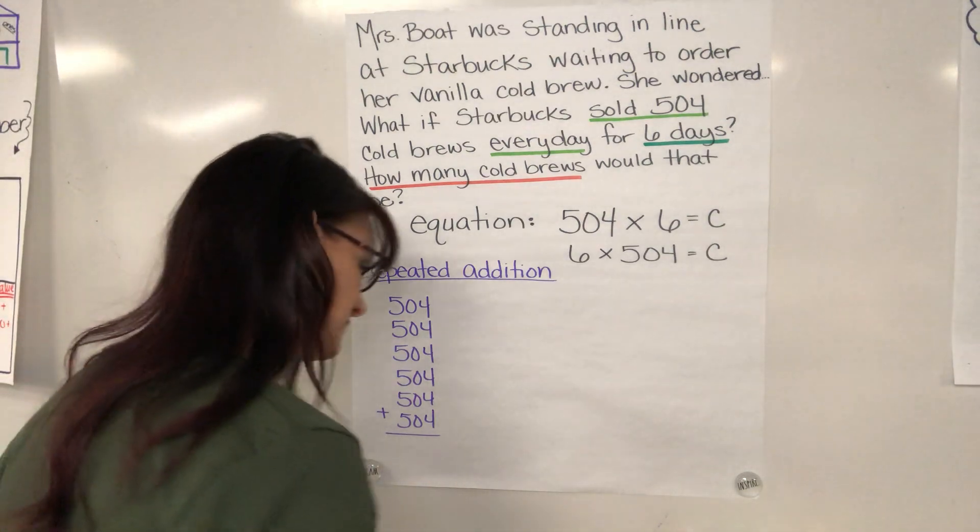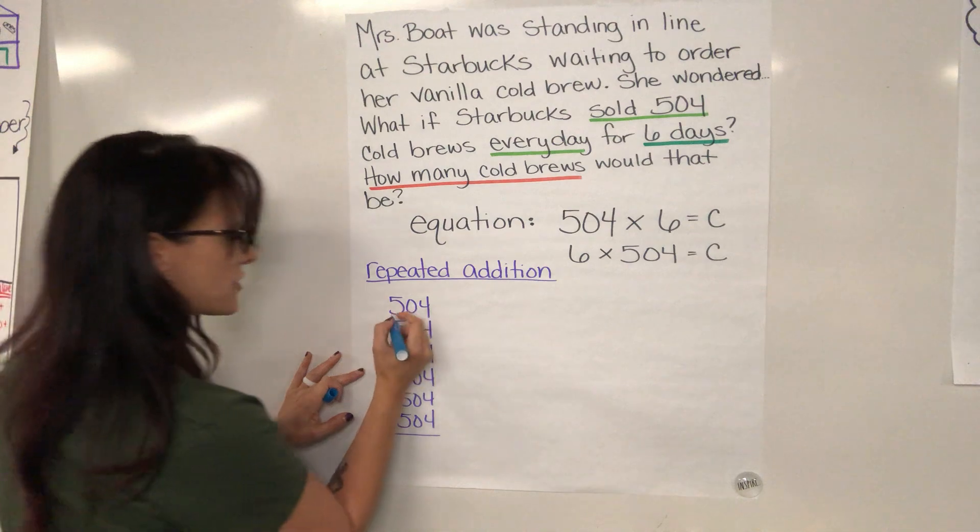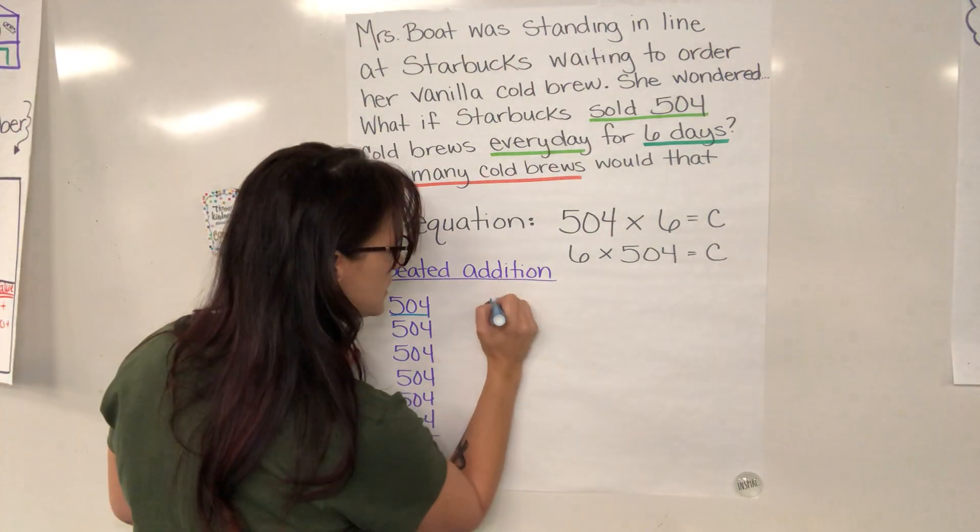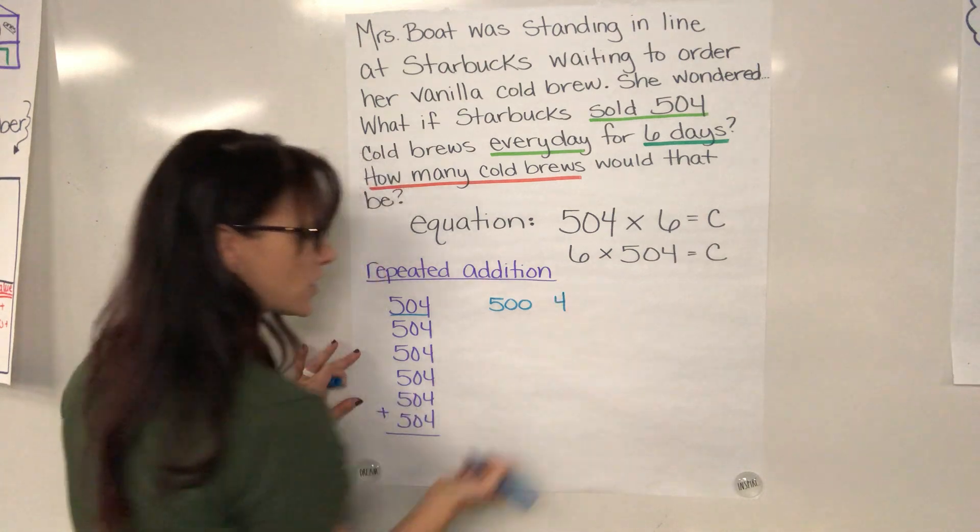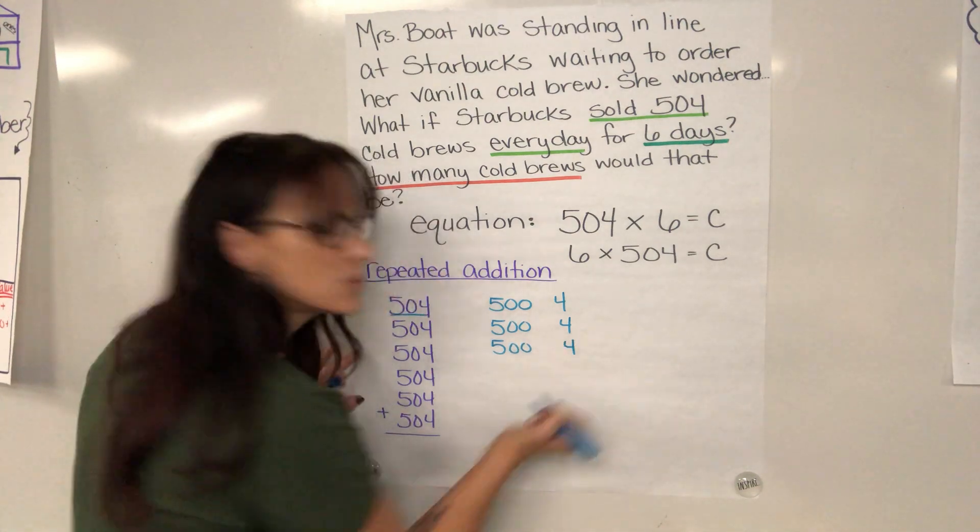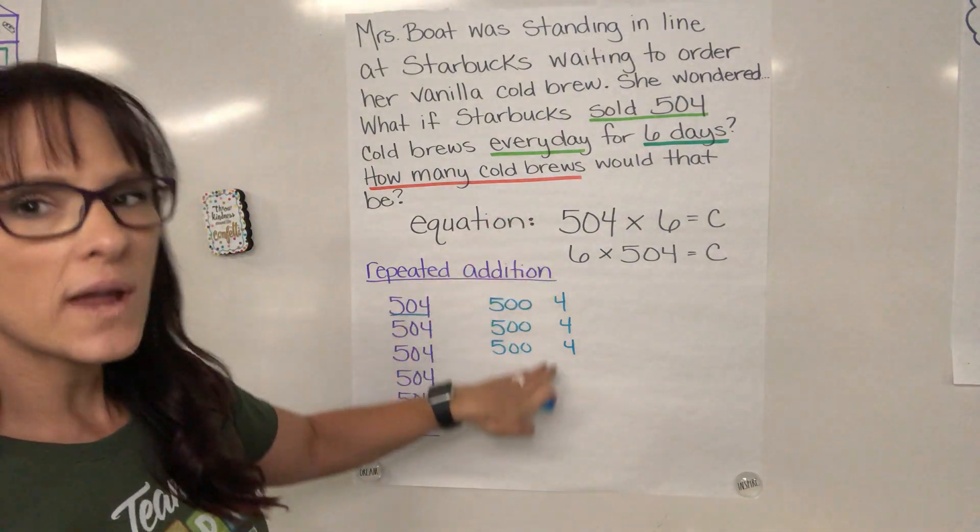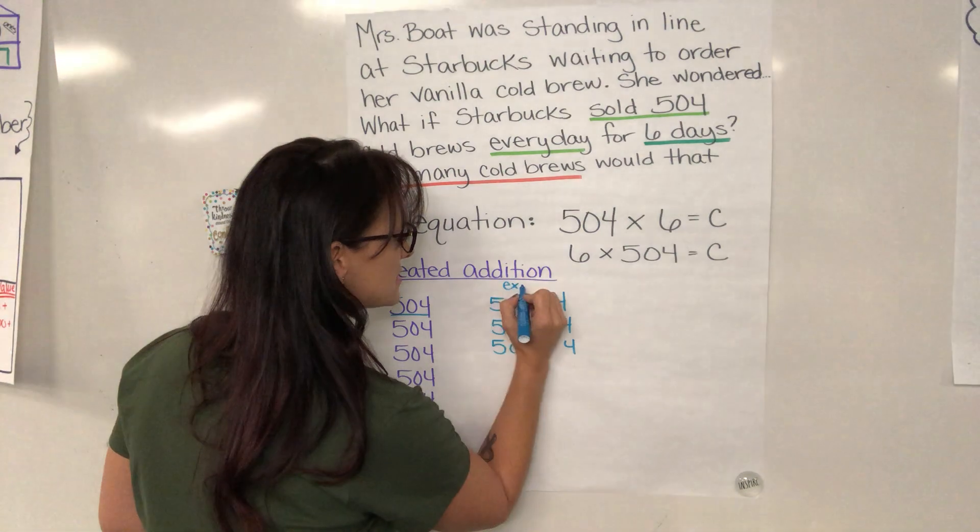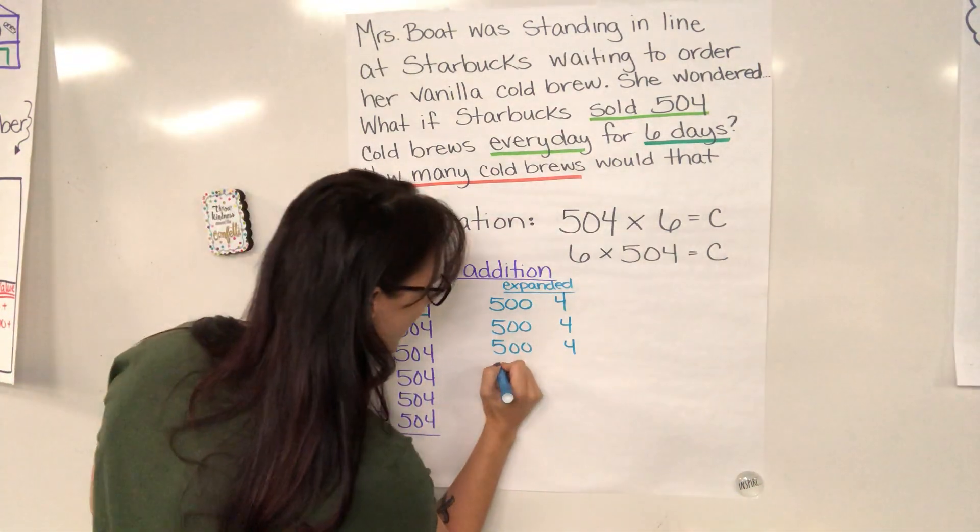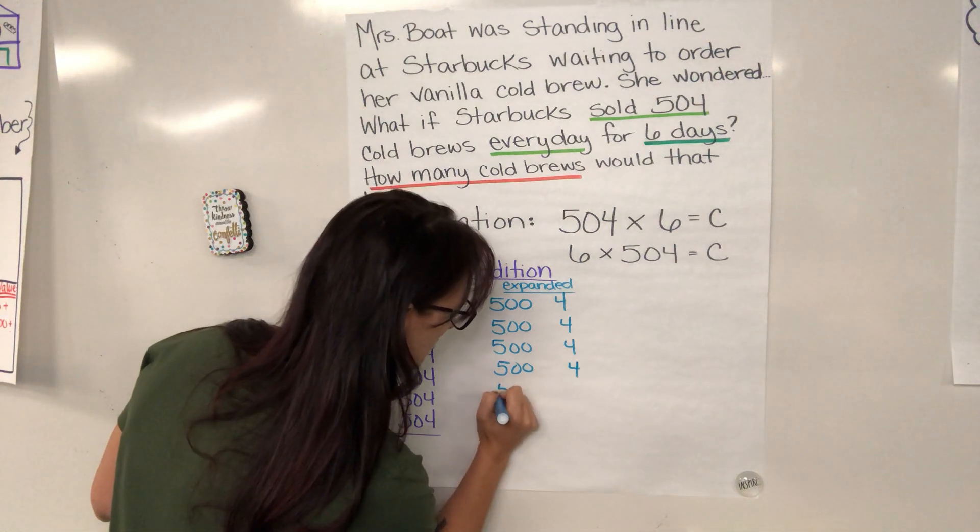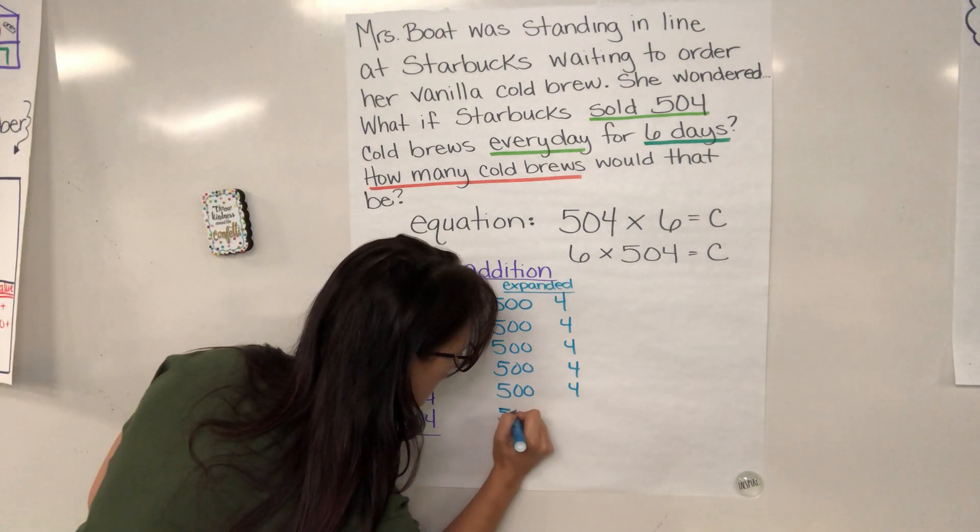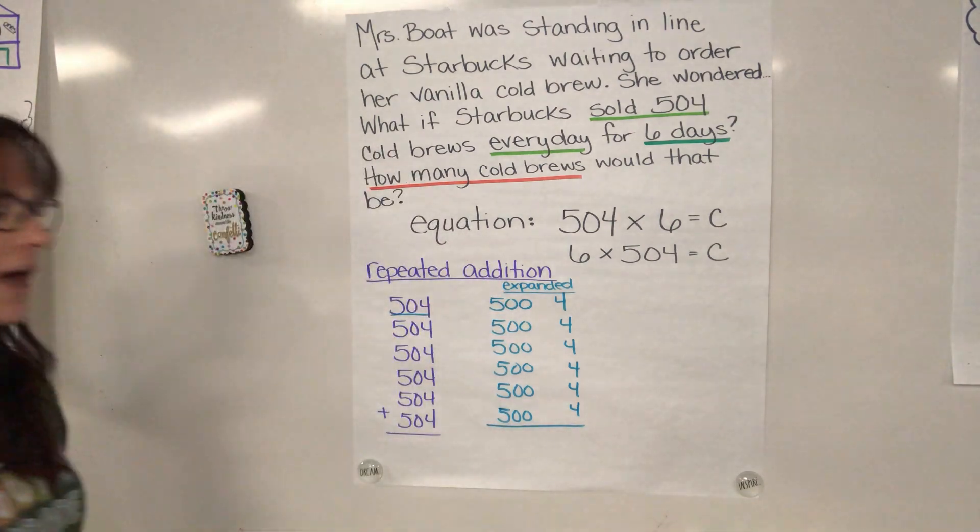Another way that you could have done it is maybe you took this 504 and you broke it up into two pieces that you already know. You could have done the same concept, almost like you're doing expanded form. So you're doing repeated addition with expanded form. You're doing it with that expanded form idea, which is something we have been talking about as we've talked about place value and how to break numbers apart.